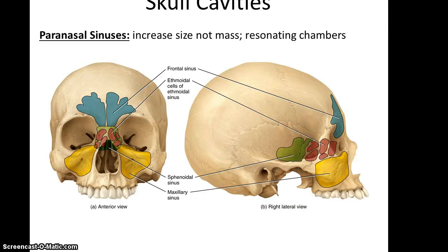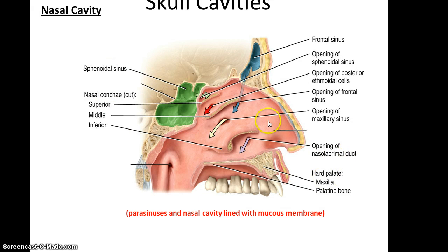The paranasal sinuses are found within the frontal bone, the ethmoid bone, the sphenoid bone, and the maxillary bones. These are open spaces in the skull that act as a resonating chamber and allow the skull to increase in size without getting heavier. When we get sick, these can fill up with mucus and drain into the nasal cavity. There are openings that lead to the frontal sinuses, the sphenoid sinus, the ethmoid sinuses, and the maxillary sinuses. There is also an opening called the nasolacrimal duct that allows tears to go from your eyes into your nasal cavity — which is why when you cry, you often get a runny nose. All of these sinuses and the nasal cavity itself are lined with a mucous membrane.